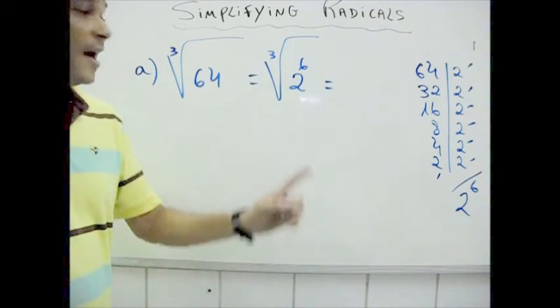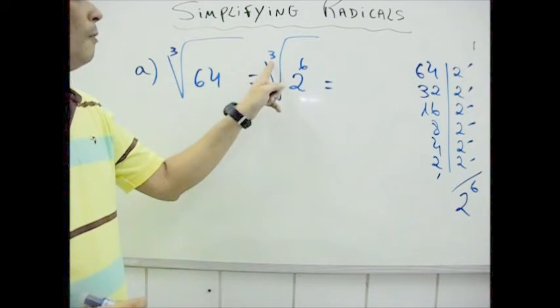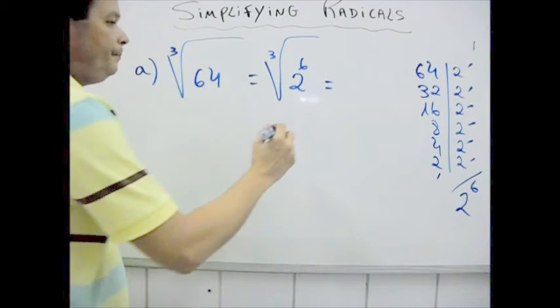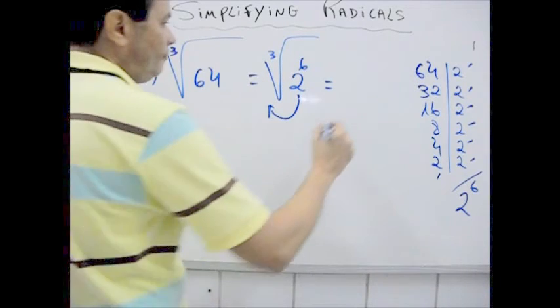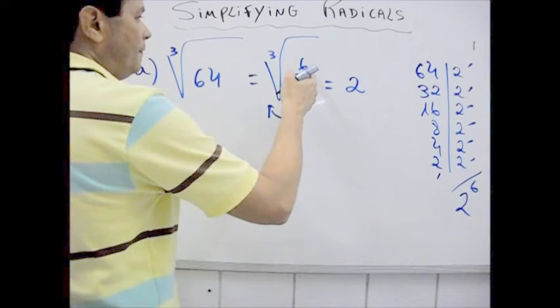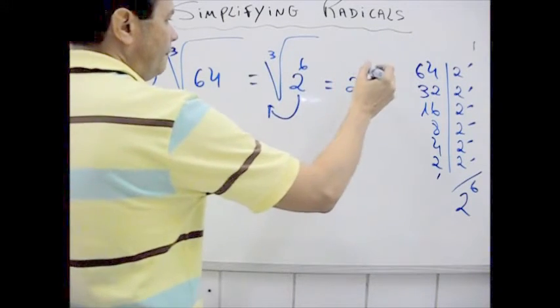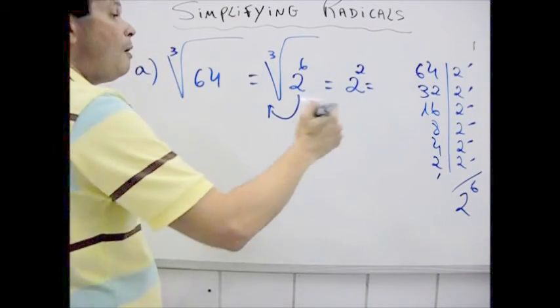Note, see that this exponent is divisible by this index, so I can put it out like this: 2, 6 divided by 3 is 2. 2 to the 2nd power is 4.